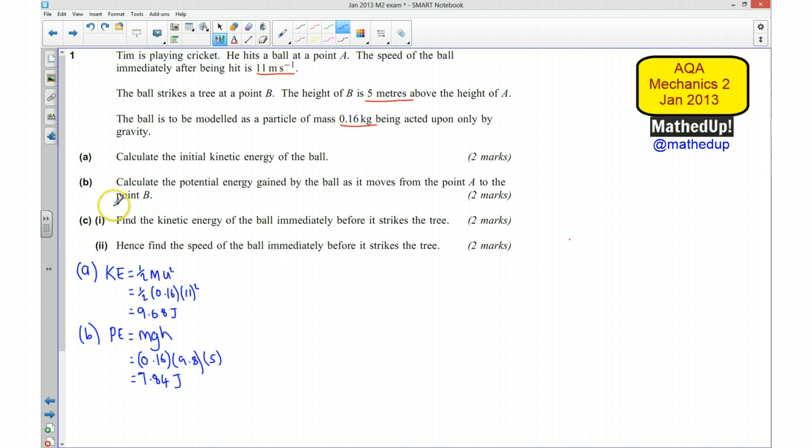So that's part B. Now, part C. For the first part of part C, we are asked to find the kinetic energy of the ball immediately before it strikes the tree. So the ball strikes the tree at point B, and that's at a height of 5 metres above the height of A. And we want to know what the kinetic energy is at that point.